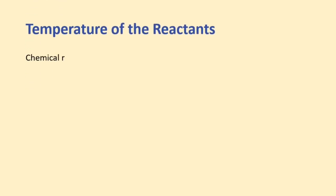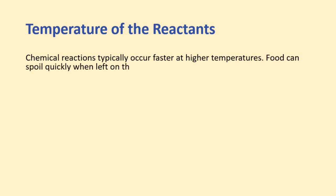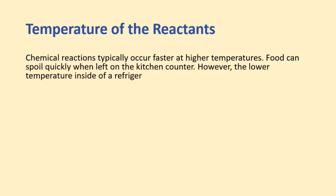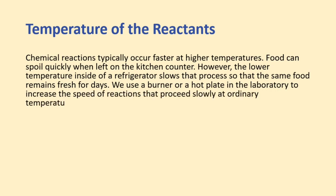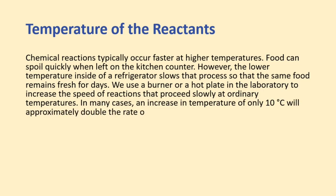Temperature of the reactants: Chemical reactions typically occur faster at higher temperatures. Food can spoil quickly when left on the kitchen counter; however, the lower temperature inside a refrigerator slows that process so that the same food remains fresh for days. We use a burner or hot plate in the laboratory to increase the speed of reactions that proceed slowly at ordinary temperatures. In many cases, an increase in temperature of only 10 degrees Celsius will approximately double the rate of a reaction in a homogeneous system.